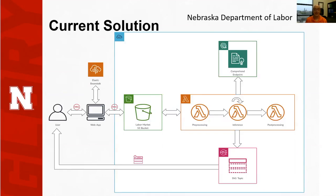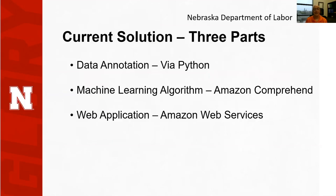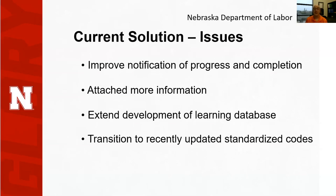We started this project last year, and here's what the solution looks like — frankly, I'm not quite sure I understand everything involved in this, but I'll let you take a look at it. The current solution has three parts. It begins with data annotation, and it uses Python script to do that. Then it has a machine learning algorithm that takes the annotated data and assigns standardized job titles, and it uses Amazon Comprehend to do that. And it does this all within a web application, using Amazon Web Services as the platform — but there are issues with the current solution.